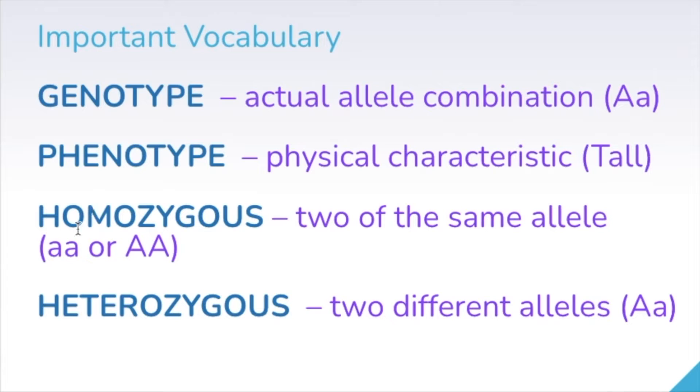Homozygous is when we have an allele pair that has two of the same allele. So for example, a little a, little a, or a big A, big A. Heterozygous is when we have two different alleles together in one genotypic pair. For example, big A, little a.